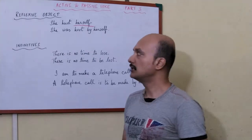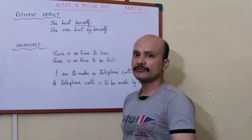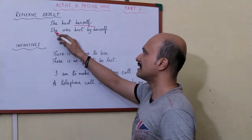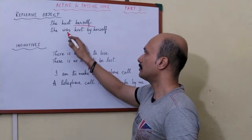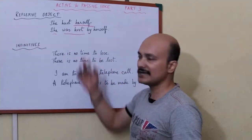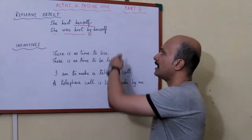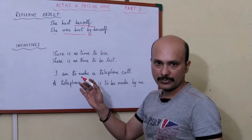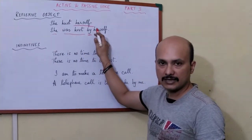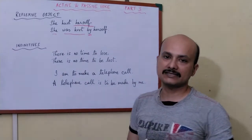Now what do we do here? We should not write 'herself was heard by her' because that doesn't make any sense. So instead, the subject doesn't change — 'she' remains 'she'. 'Heard' becomes 'was heard' because it is in the past tense. 'By' is the preposition we use, and then we write the reflexive word as it is: herself. So 'she heard herself' becomes 'she was heard by herself'.